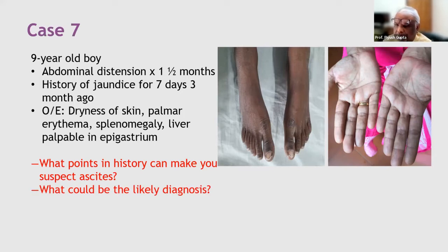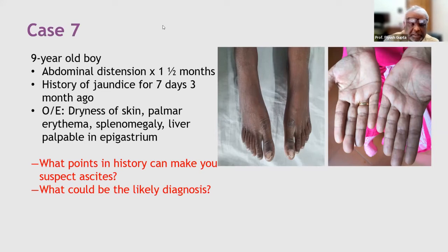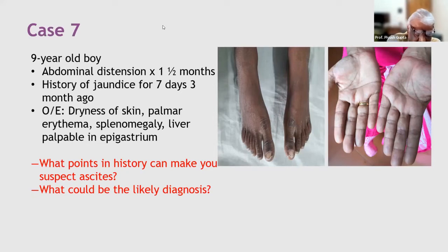Looking at the findings — ascites, past history of jaundice, irregular liver enlargement, splenomegaly, palmar erythema, and skin dryness — the differential diagnosis is chronic liver disease.